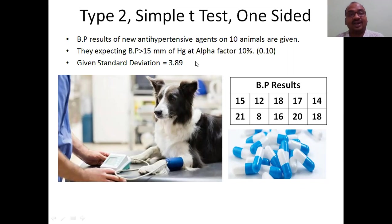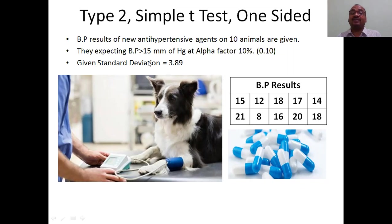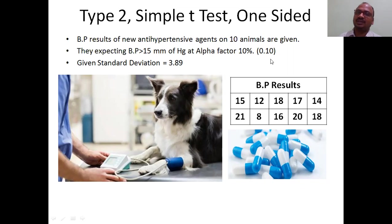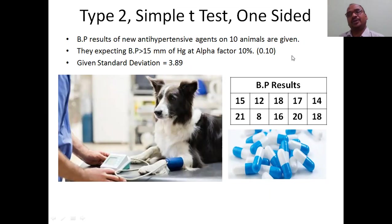In 10 animals, what they are expecting is 15 — we call this the population mean. The population standard deviation is given as 3.89. You have to compare this at an alpha factor of 10%, which in decimal is 0.10.